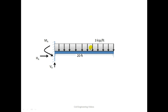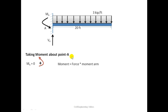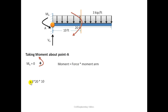Now I will find out the reactions for the cantilever when UDL is acting on it. Similarly, I will take the moment about point A. The moment arm for the UDL resultant force is half of 20, which equals 10. This UDL creates a clockwise moment about point A. Only these two moments — from the UDL and MA — are acting about point A, and their sum is equal to zero.